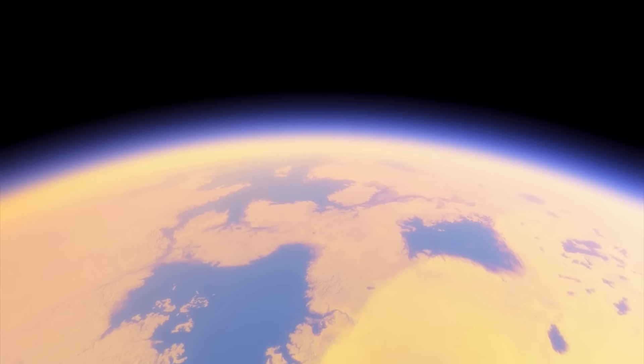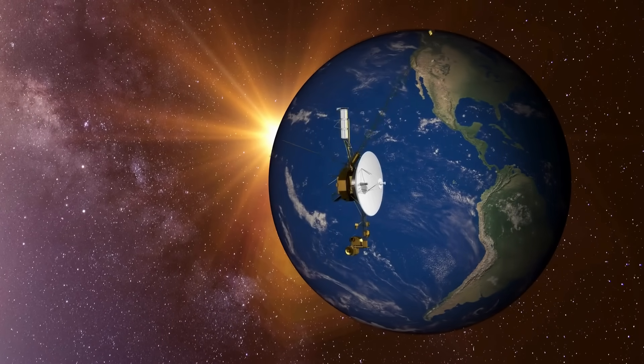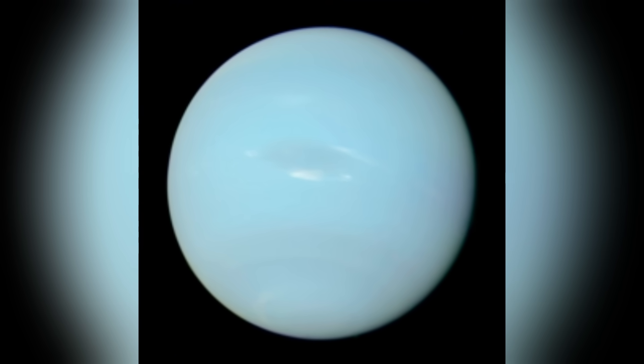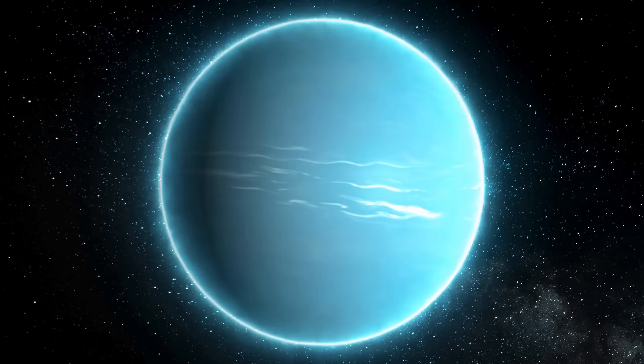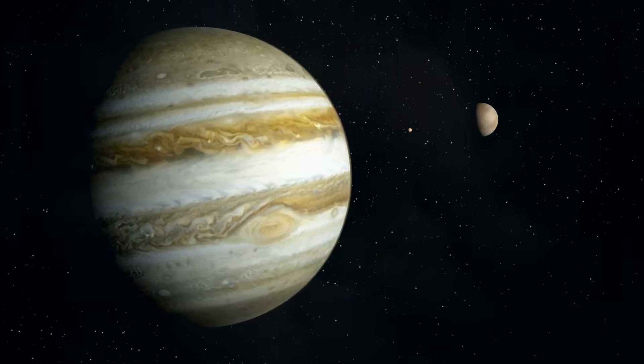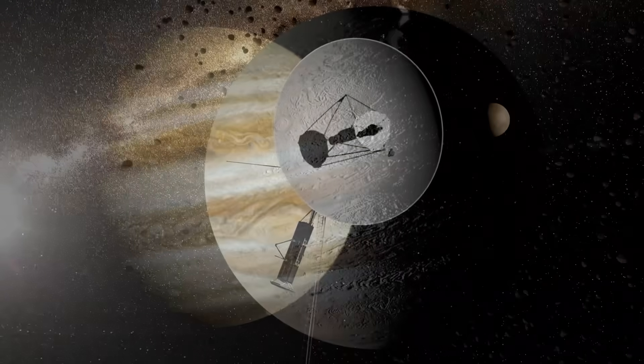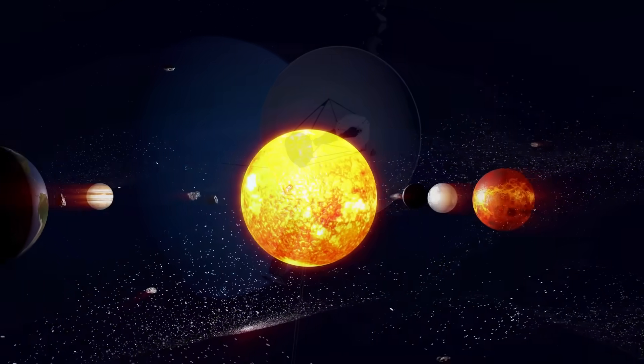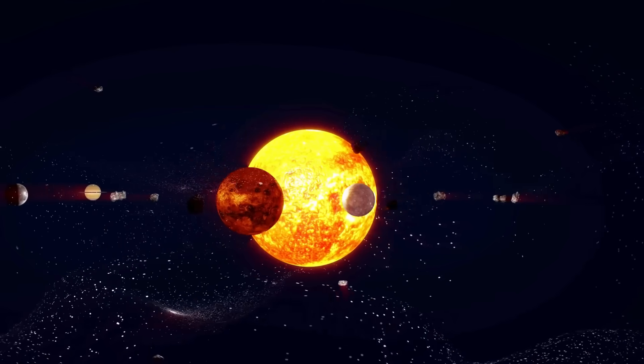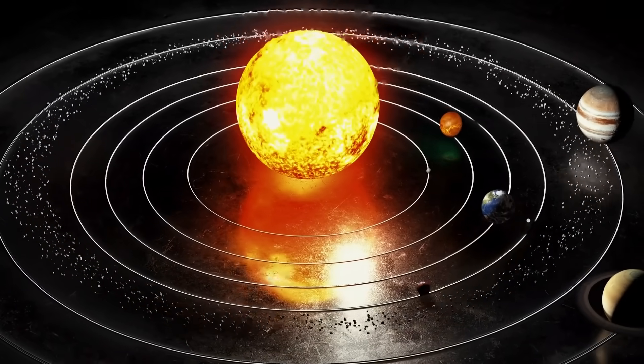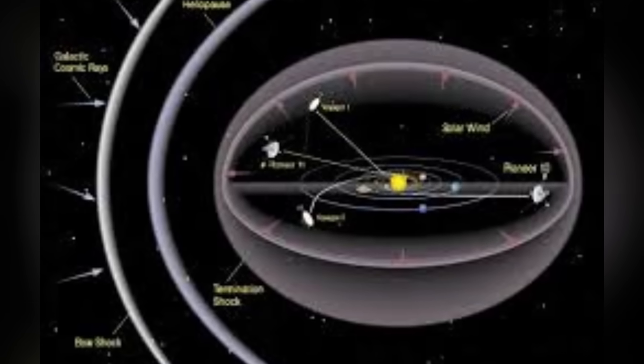Voyager 2, the only spacecraft to have closely studied Uranus and Neptune, embarked on a more extensive mission, visiting these ice giants along with Jupiter and Saturn. It uncovered 10 new moons, identified Uranus's tilted magnetic field, and recorded Neptune's record-breaking winds. Voyager 1 was steered higher and out of the solar system's plane after completing its flybys of Jupiter and Saturn. On the other hand, Voyager 2 proceeded to investigate Uranus and Neptune by continuing its journey through the solar system's plane. Eventually, both spacecraft passed through the heliopause.